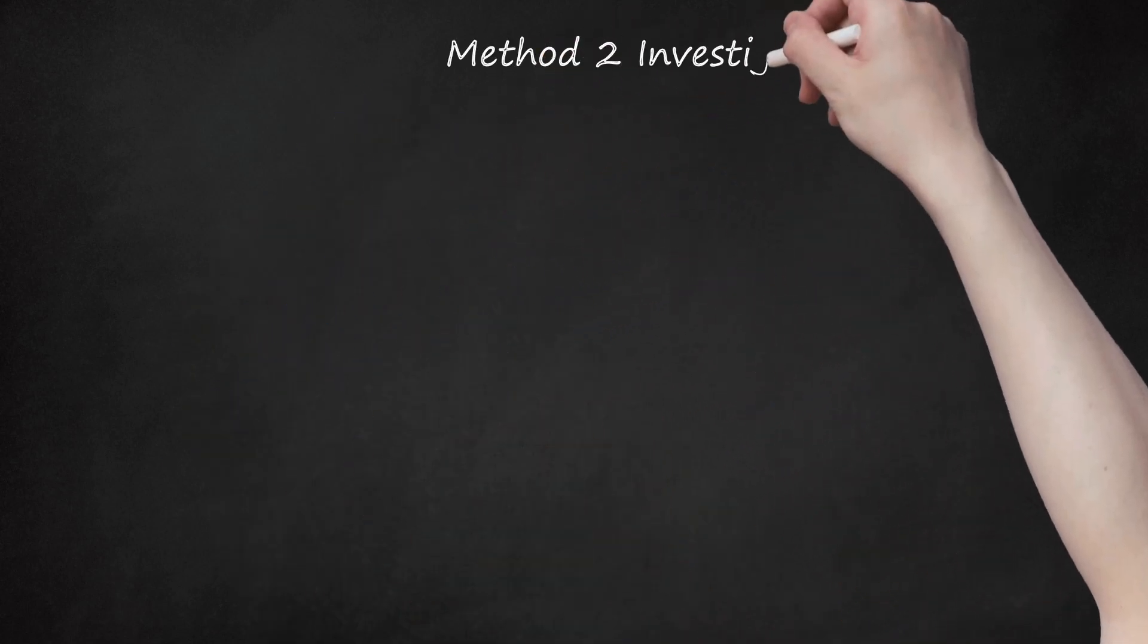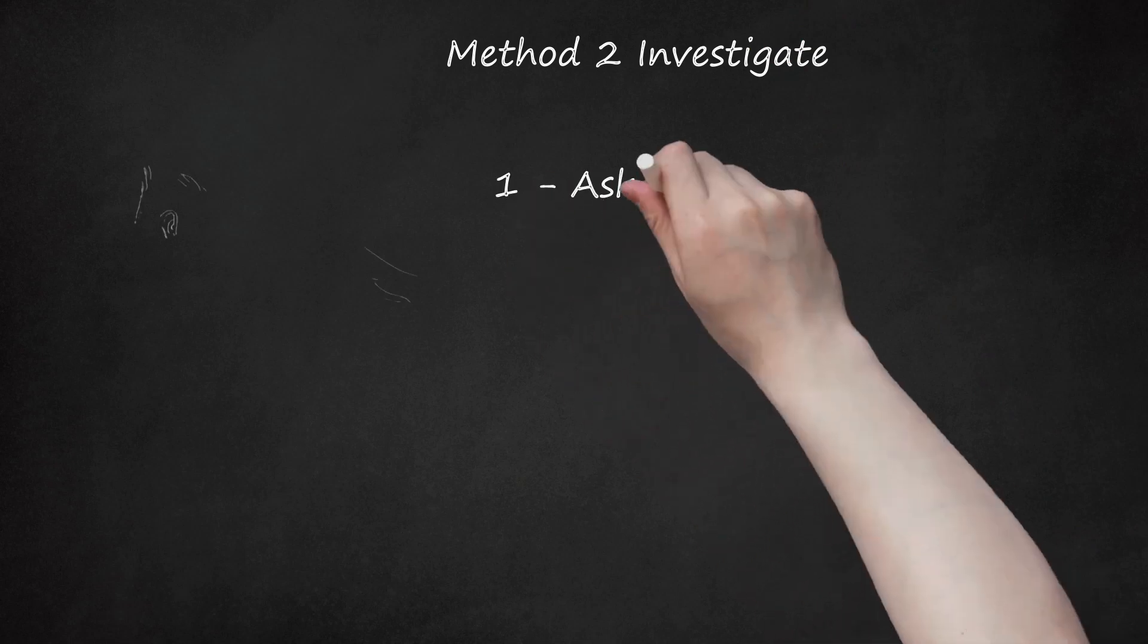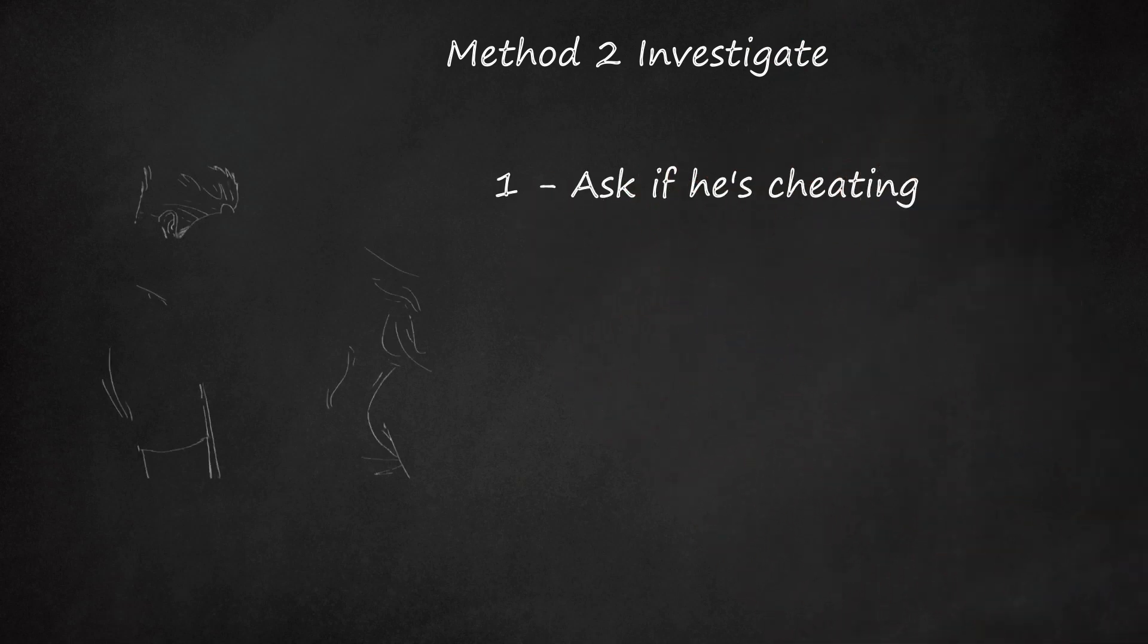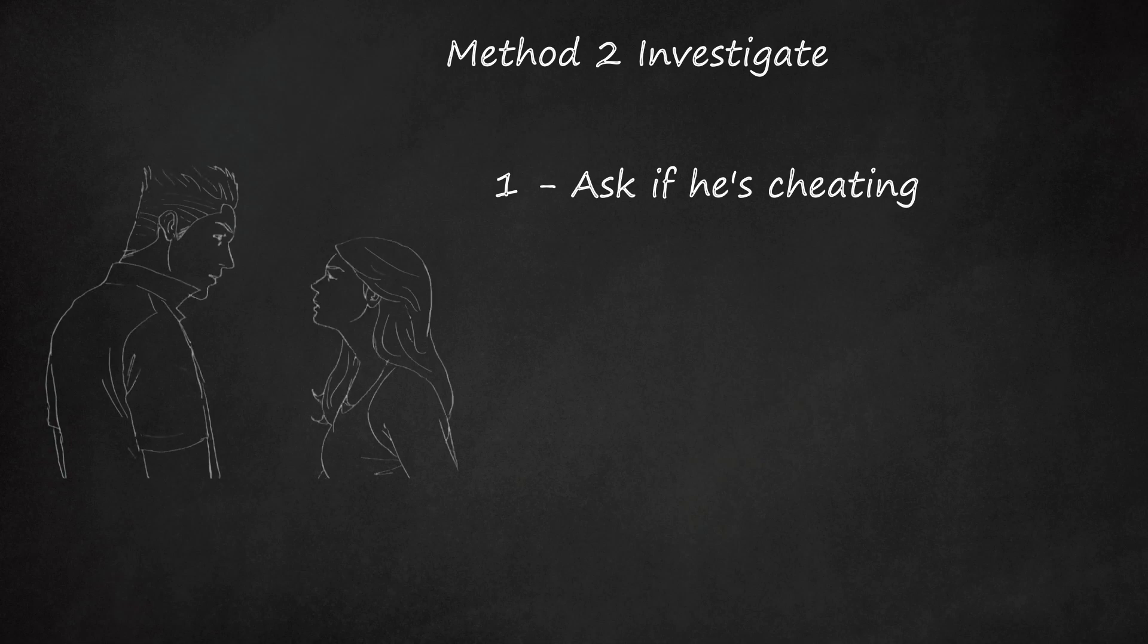Method 2: Investigate. Ask if he's cheating. Once the signs have added up and you feel like you've already found out that he's cheating, it's time to make him confess. The easiest way is just to have a conversation about it. Then you can avoid snooping through his stuff, getting hurt when you see something you don't like, and spare yourself the extra pain and humiliation.